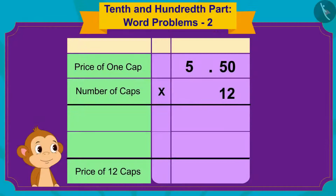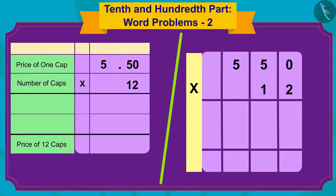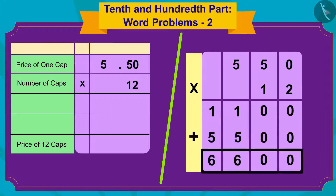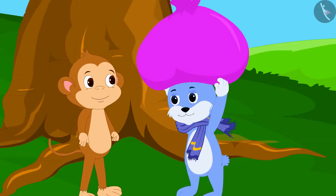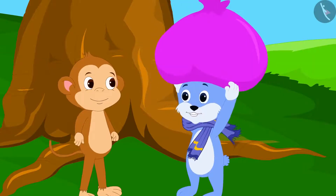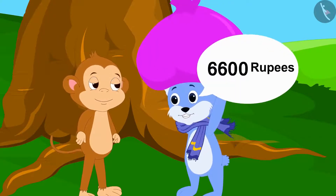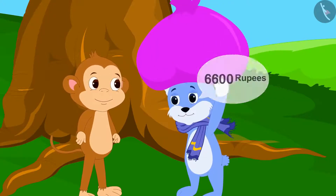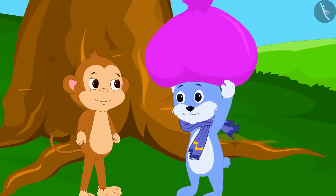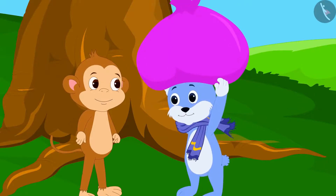Babban quickly multiplied it on a paper and wrote 6600 as the answer. Bunny excitedly asked: then will I earn 6600 rupees?